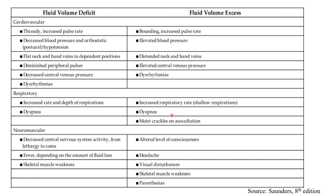There is increased respiratory rate in fluid volume deficit. In fluid volume excess, there is auscultation of moist crackles. For neuromuscular: fluid volume deficit shows decreased central nervous system activity, fever, fluid loss, and skeletal muscle weakness. Fluid volume excess shows altered level of consciousness, headache, visual disturbances, and skeletal muscle weakness.